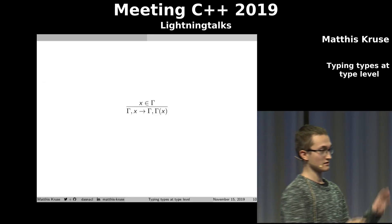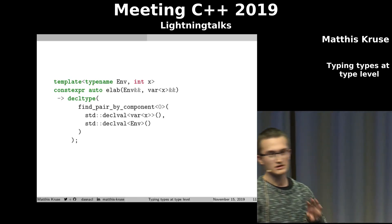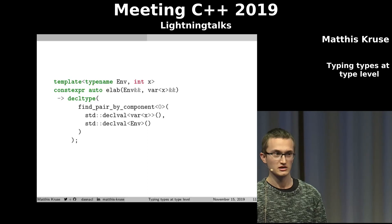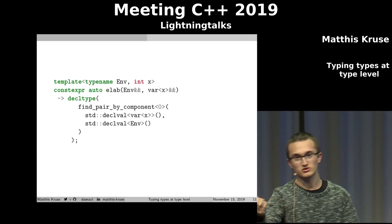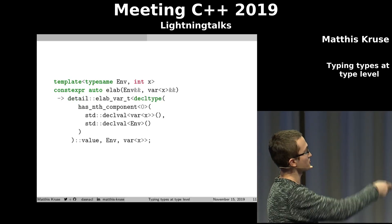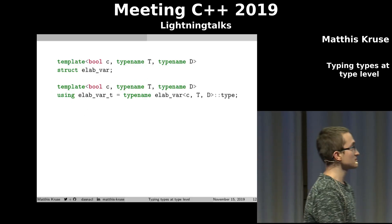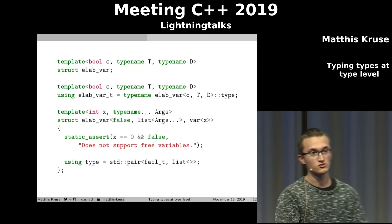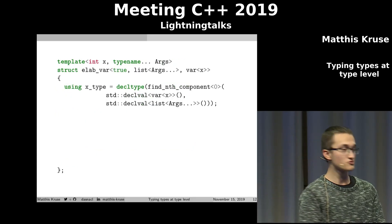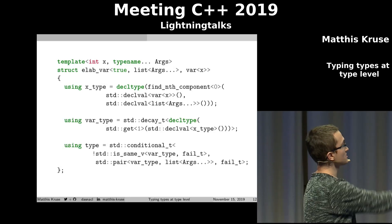Now let's take a look at this beast again. Intuitively, we want to look up the variable in the environment. So we need some kind of function that goes through the list and gives us back whether we can find the type or not. And if we can find the type, then we want to actually get the type. In order to do that, we need a struct, because otherwise we get into compile-time errors due to eager evaluation. And this struct can look like that. In the false case, so if the variable is not in the typing environment, then we say we cannot handle free variables. And in the true case, we simply grab the type from the environment, get the actual type from the pair, and give it back.